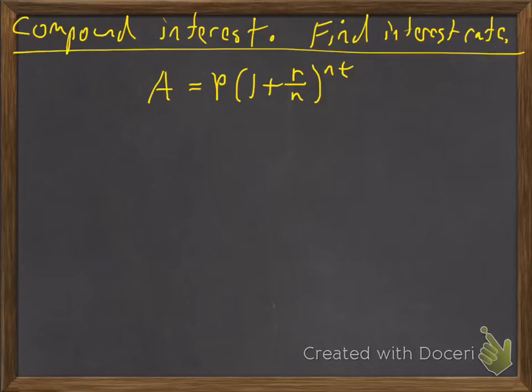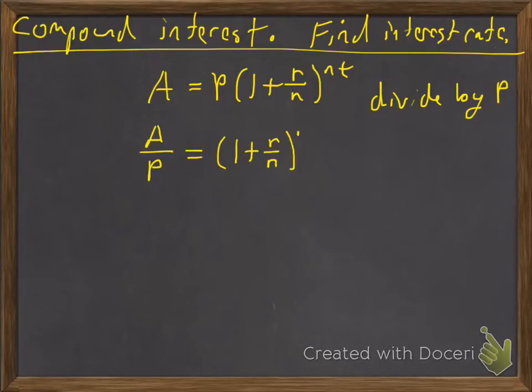And the first thing we're going to do is we're just going to isolate the base. So we're going to divide both sides by P. So when we do that we'll have A over P is equal to 1 plus r over n to the nt power.